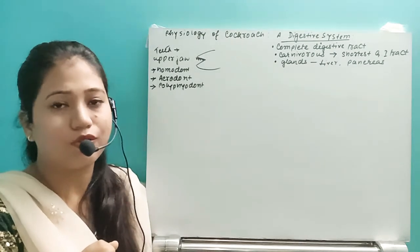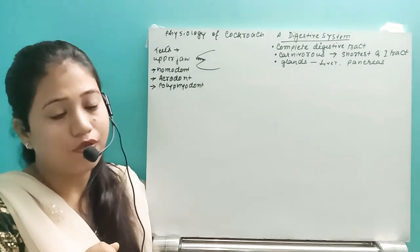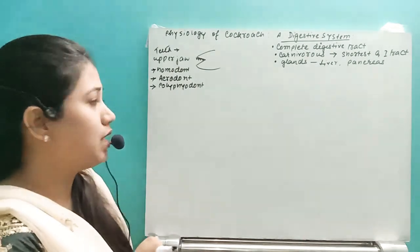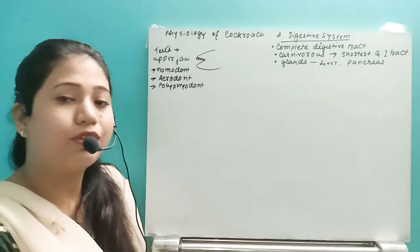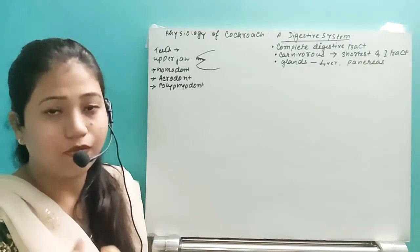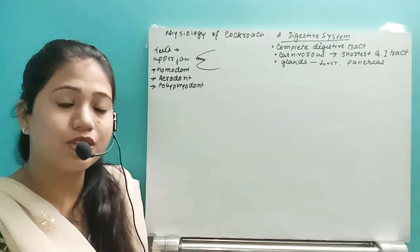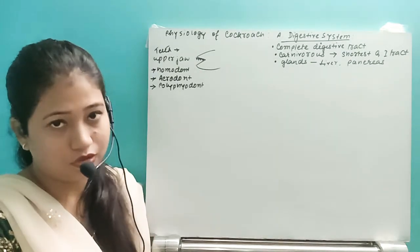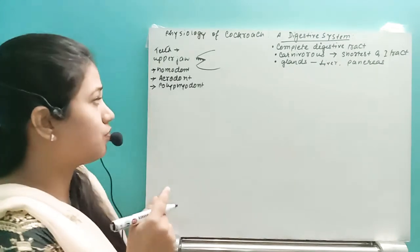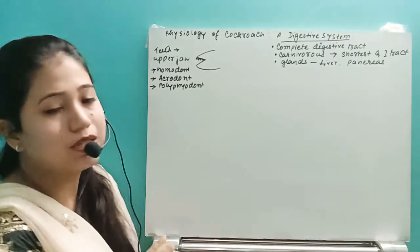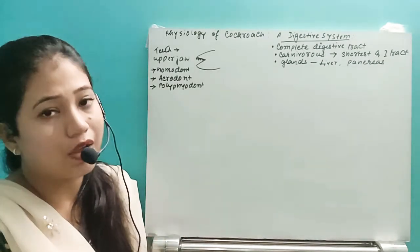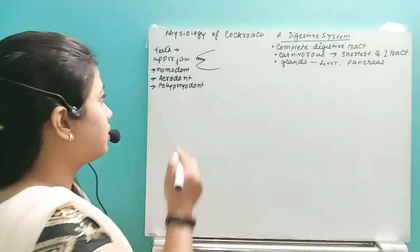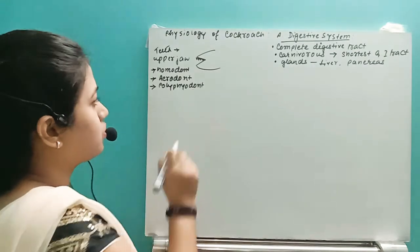Because teeth fall off and regrow multiple times in their lifetime, they are said to have the polyphyodont type of teeth. We humans have only two sets, so we are diphyodont; in their case it is polyphyodont.